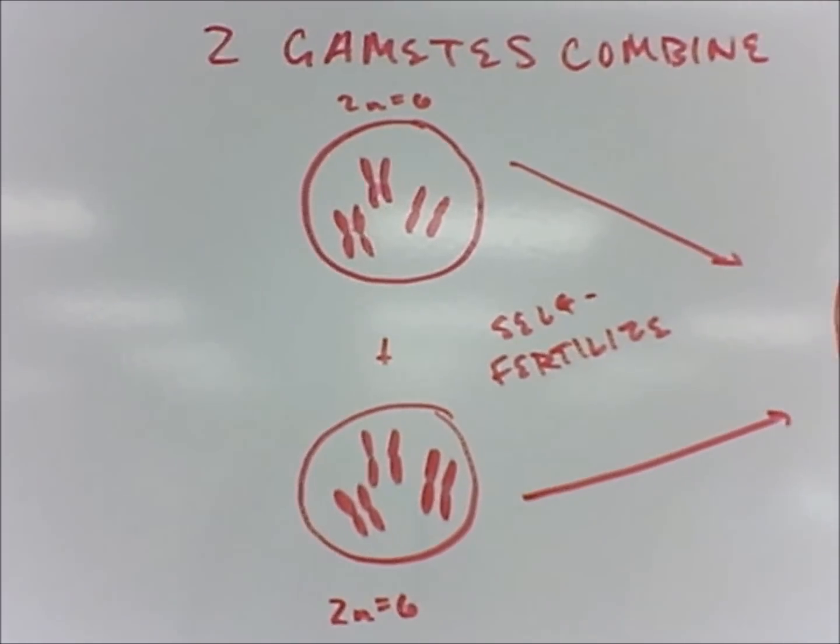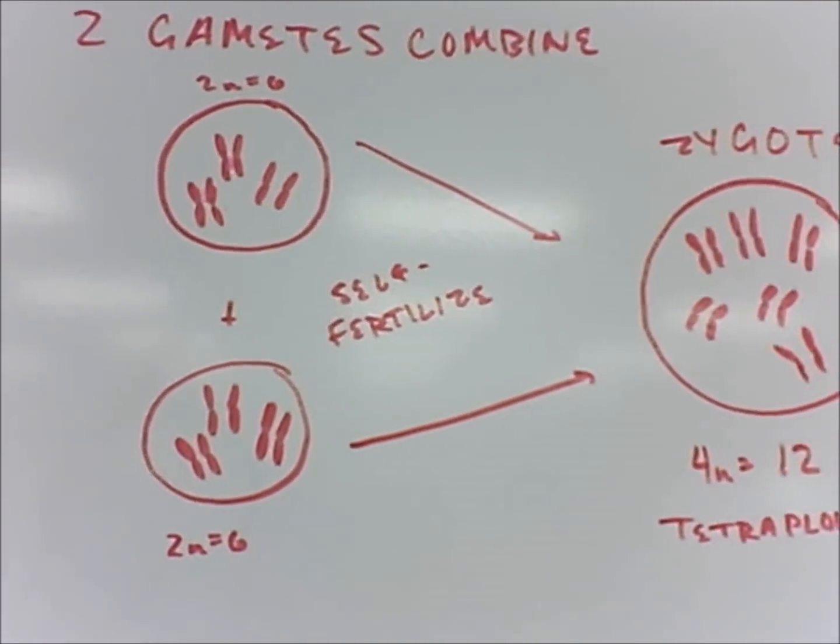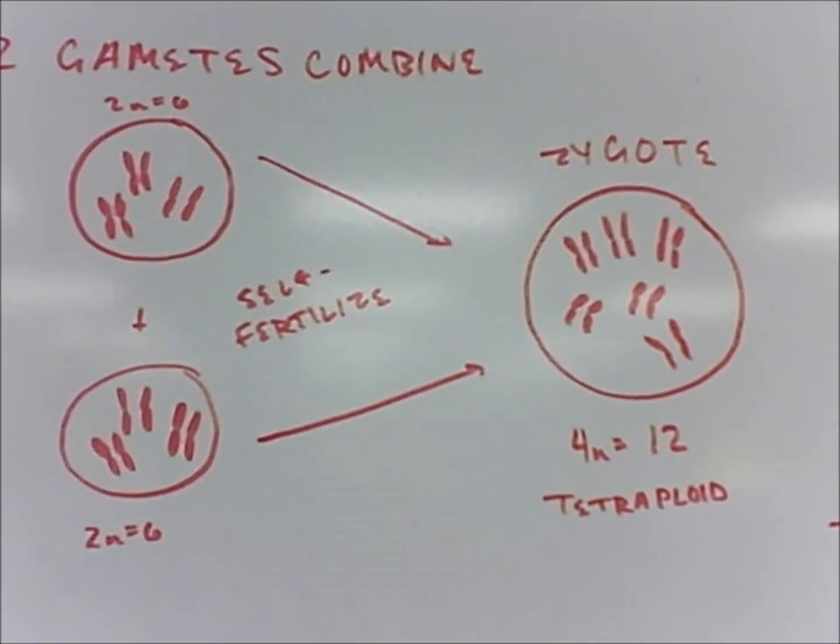When two diploid gametes combine to create a zygote, the zygote has twice as many chromosomes as the diploid cell, which means that it's tetraploid.